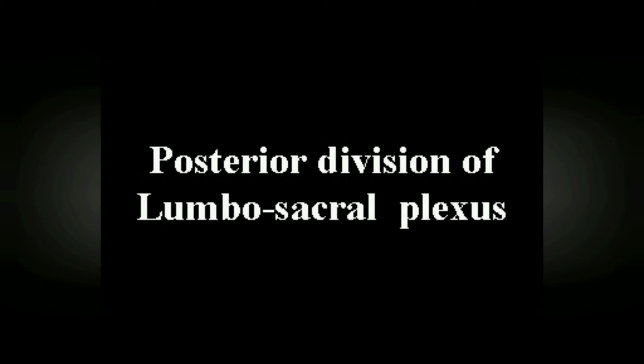Let us have a brief overview of the lumbosacral plexus. The lumbosacral plexus is formed by the union of ventral primary branches of the last three lumbar and first, second or third sacral spinal nerves. It is divided into two divisions, namely anterior and posterior. The anterior division is situated on the lateral aspect of the hip and the posterior division is situated in the medial aspect of the hip.